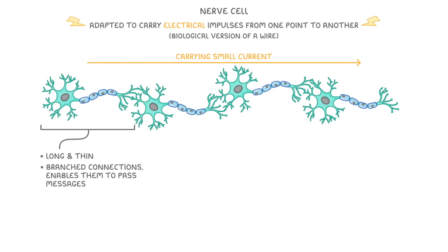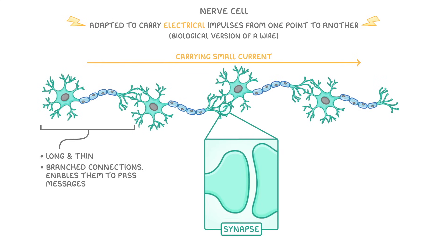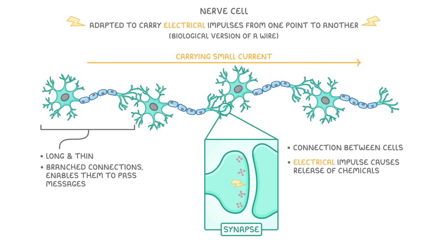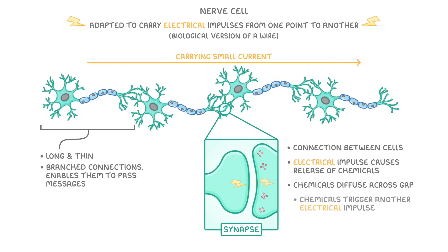For one nerve cell to communicate with another, we need a synapse, which is the connection between the cells. Whenever an electrical impulse hits the end of a nerve, it causes the release of some chemicals, which diffuse across the gap to the next nerve cell, where they can trigger another electrical impulse. This new electrical impulse will then continue along the new neuron all the way to the other end, where it will hit another synapse, and the whole thing will start over.